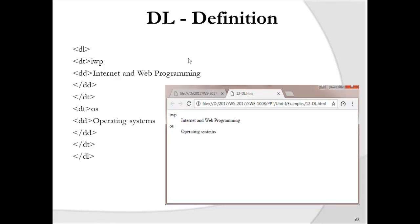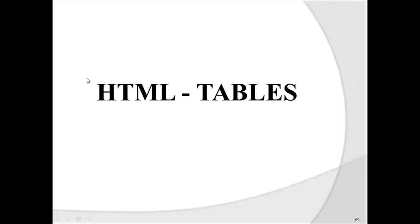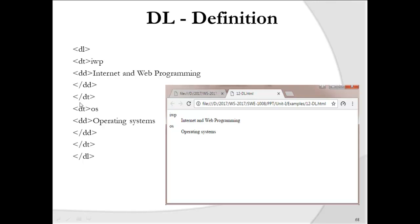A definition list (DL) uses DT for definition term and DD for definition description. You close each DT before creating the next. In the output, the term appears with its definition indented below it. There are three types of lists: ordered, unordered, and definition list.